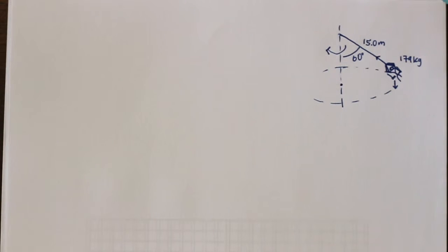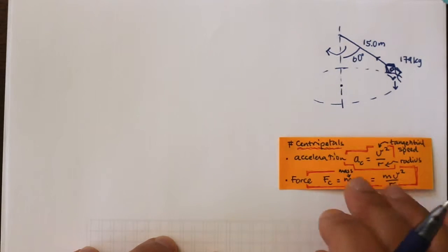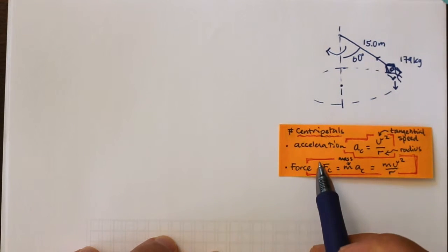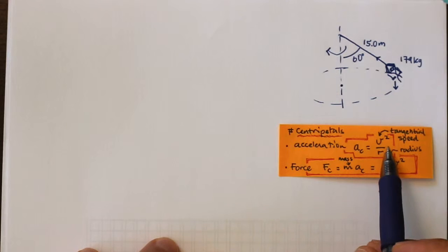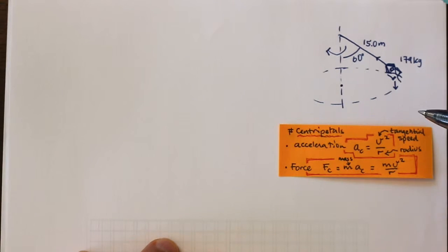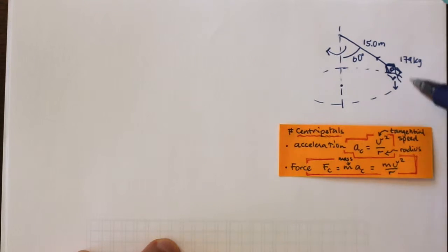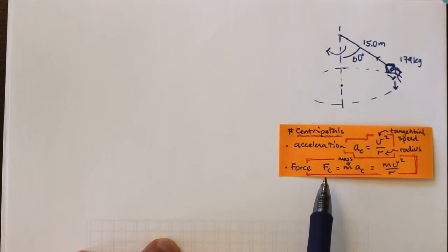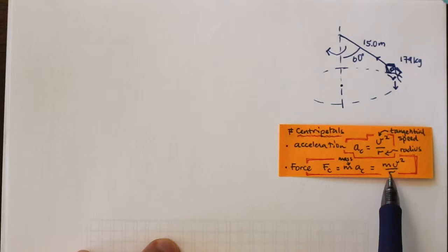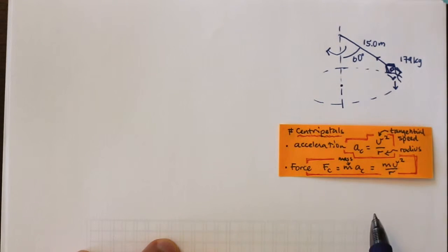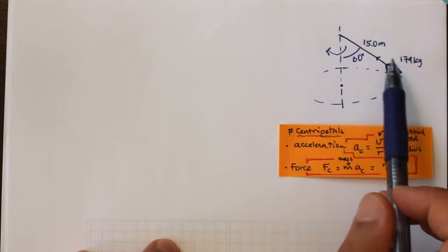This is a uniform circular motion problem. I'm thinking about centripetal acceleration, centripetal force, and the relationship to tangential speed. My biggest concern is figuring out what force is responsible for the circular motion, because that would be my centripetal force. If I equate that to mv²/r, then v is the tangential speed I can calculate.